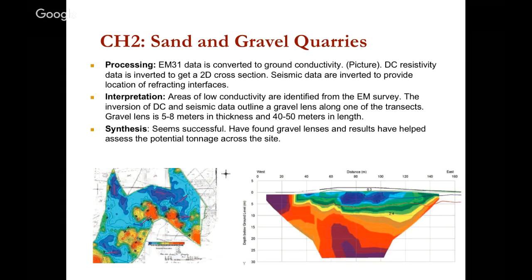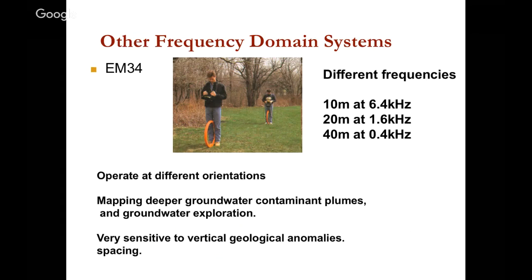The other lines on the section show results from the seismic survey — the numbers indicate seismic velocity in kilometers per second, ranging from about 300 meters per second near surface down to a couple of kilometers per second at depth. Everything fits together: low conductivity, low seismic velocity, giving a good indication of where to dig if you want to find those gravel deposits.